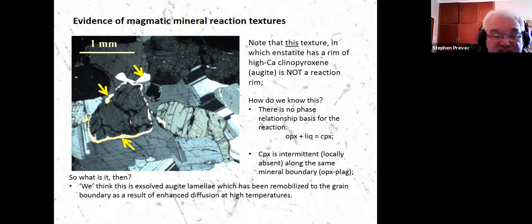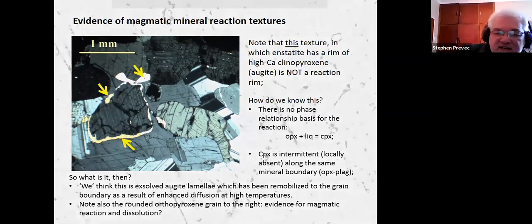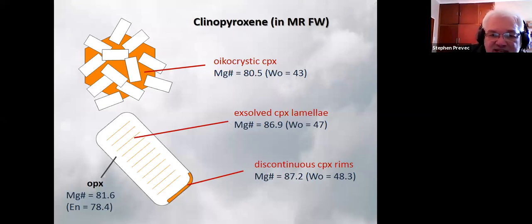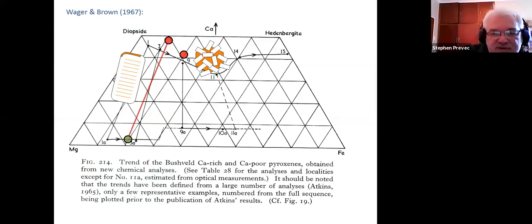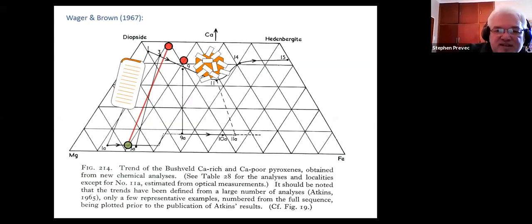And this is supported by the probe data, which indicates that the exsolution lamellae, where they are preserved, have the same composition as these clinopyroxene rims and are much more primitive though than the oikocrystic interstitial clinopyroxene found elsewhere in the same rocks. So if we plot that on the clinopyroxene compositional diagram, this is consistent with sort of early crystallized clinopyroxene moving by diffusion and distinct from late crystallized interstitial clinopyroxene.